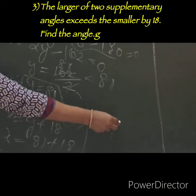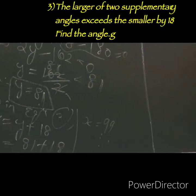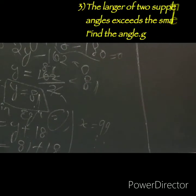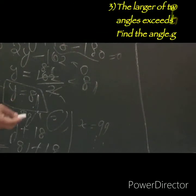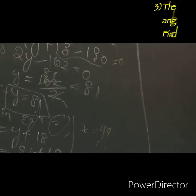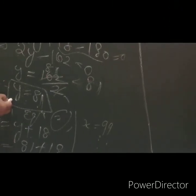So X equals 99. We got two angles: one is 99 degrees and another is 81 degrees. Thank you.